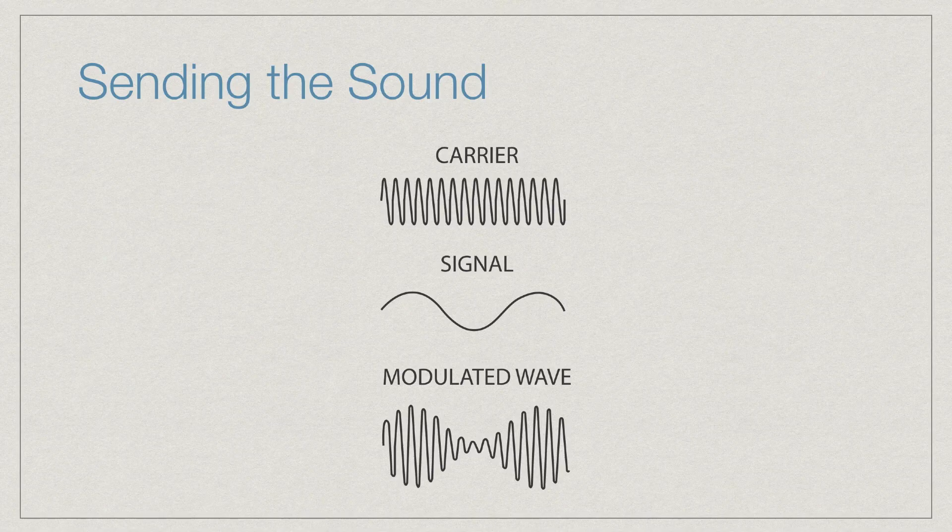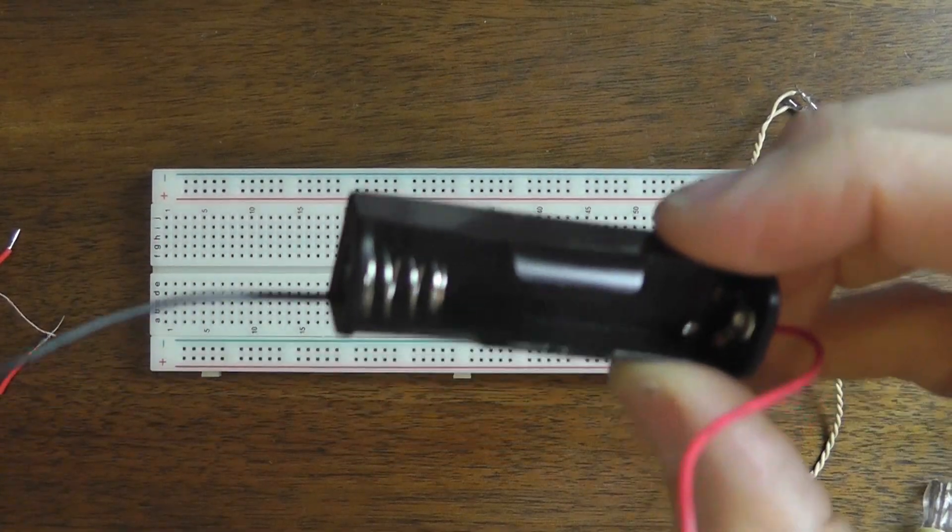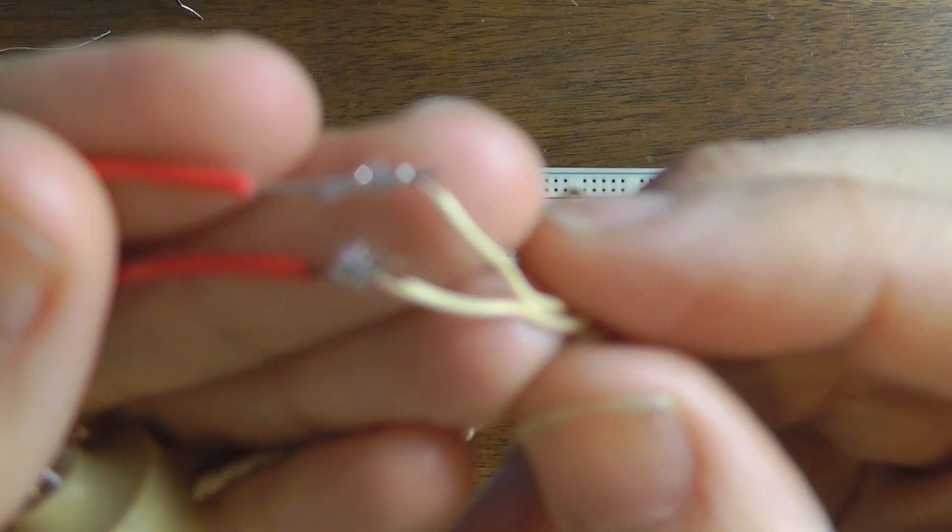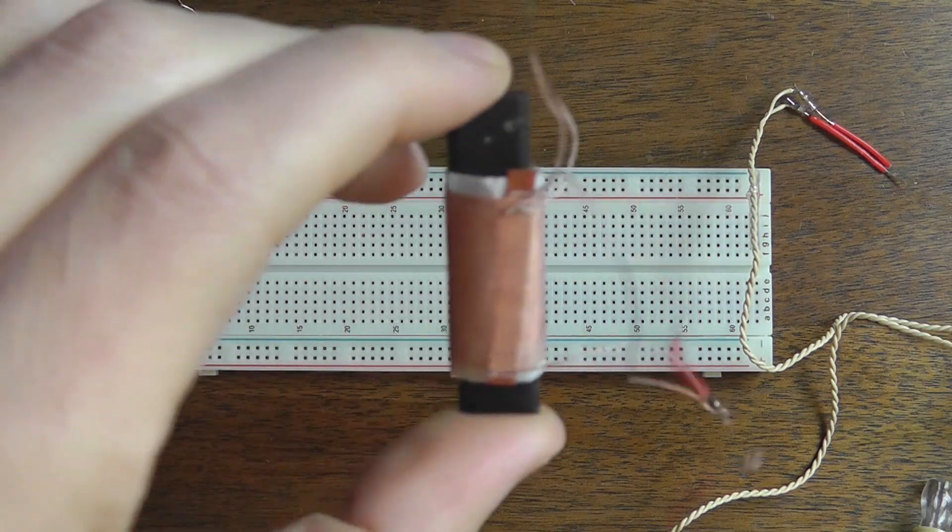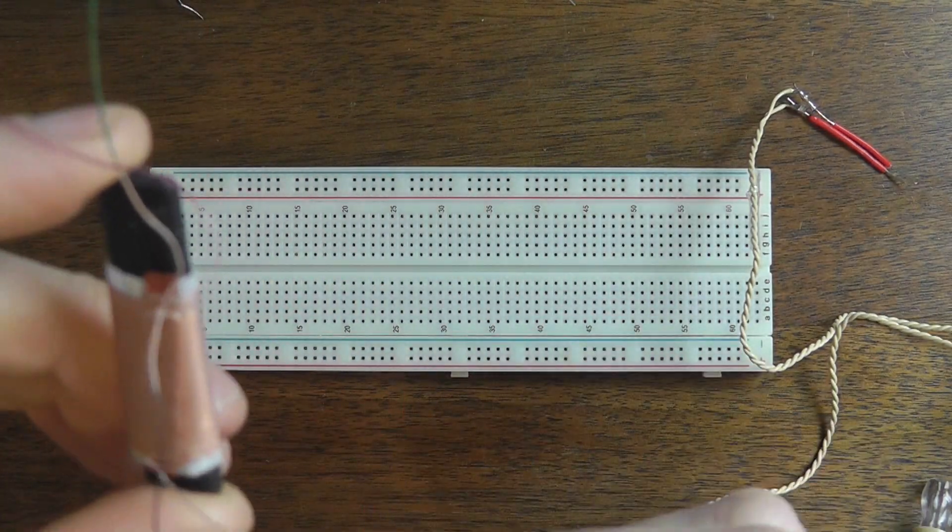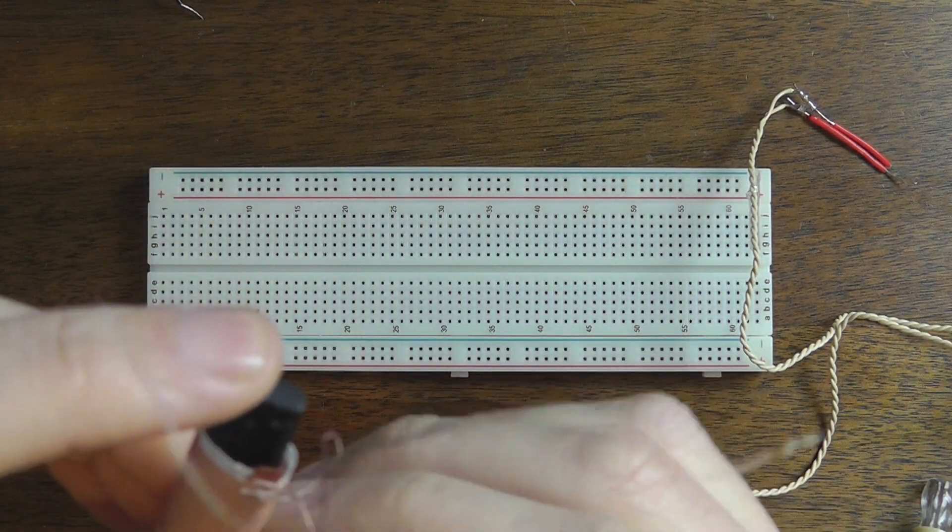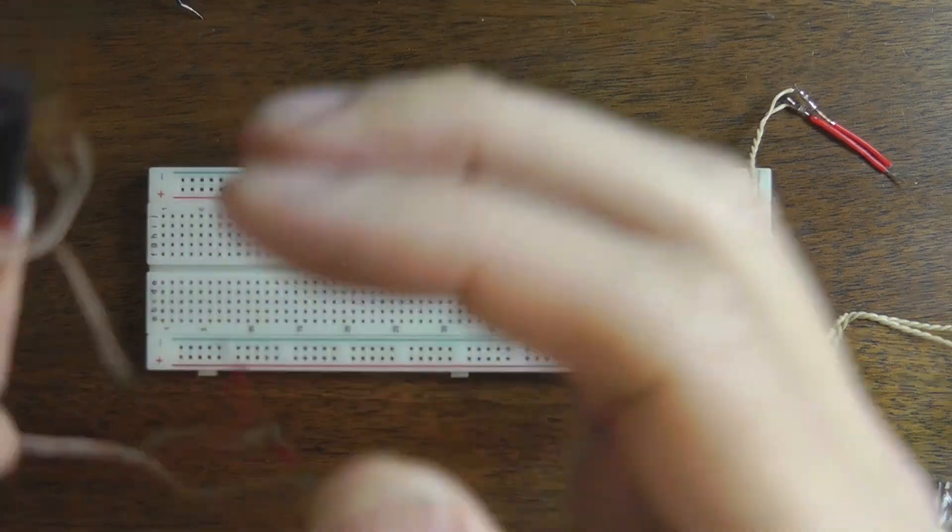So now I want to jump over and actually create our breadboard version of a three-penny radio. Now I'm going to connect my black lead into the negative port and the red lead into the positive port on the breadboard. And you can see right here I have my ferrite antenna and how I'm going to add terminals to the end of it.